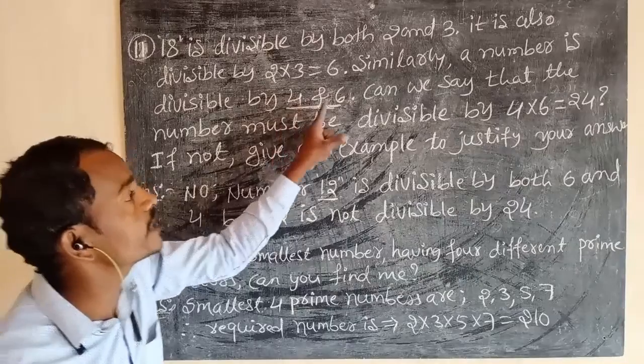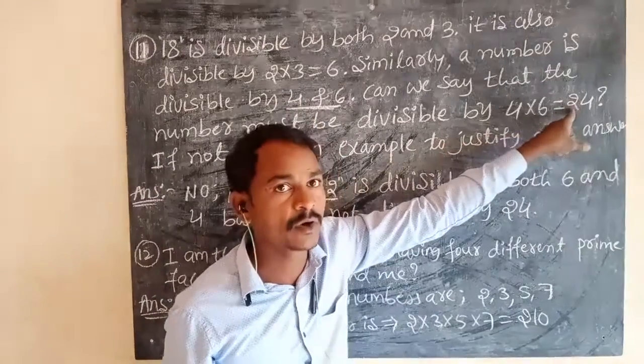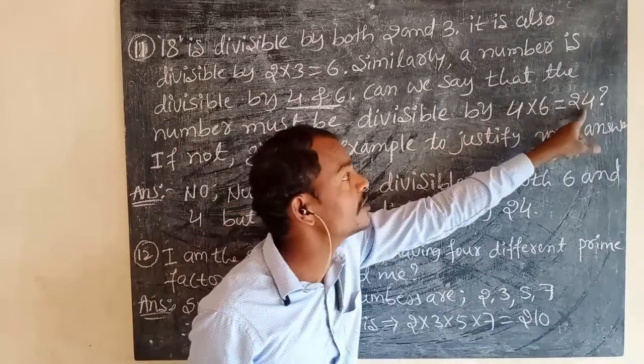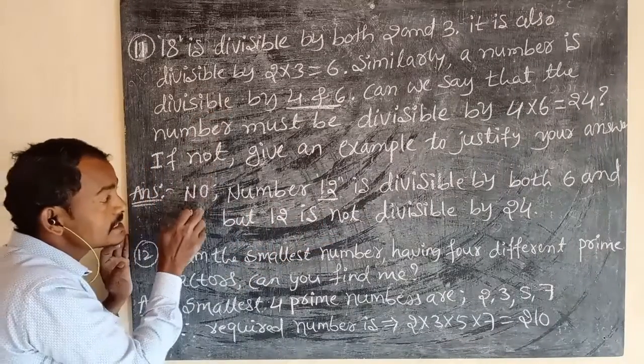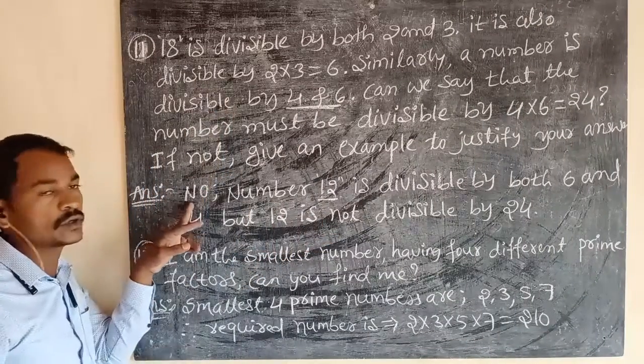Then the product of these two numbers is 24. So, in the 24 table, there is no 12. That's why this is the answer. Answer is no.